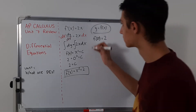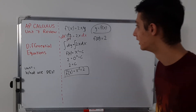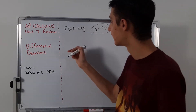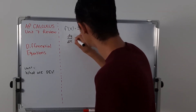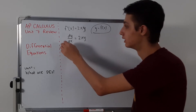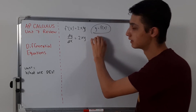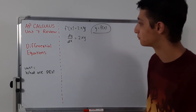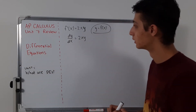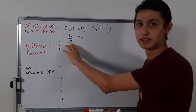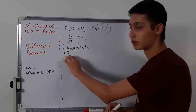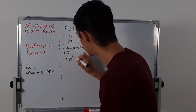Now what if we have dy over dx equals 2xy? This changes things. What I want to do is move everything with y to the side with dy, and everything with x to the other side. This process is called separation of variables, because we're separating the variables — all the y's on one side, all the x's on the other. We're going to multiply both sides by dx and divide both sides by y. Then we integrate both sides, and the integral of 1 over y is ln of the absolute value of y.